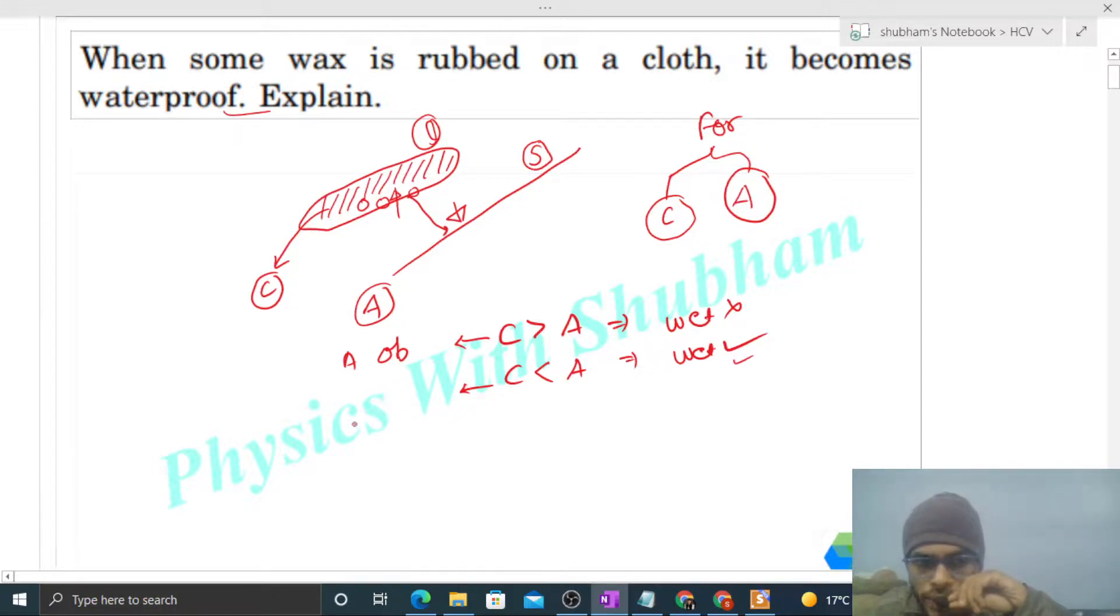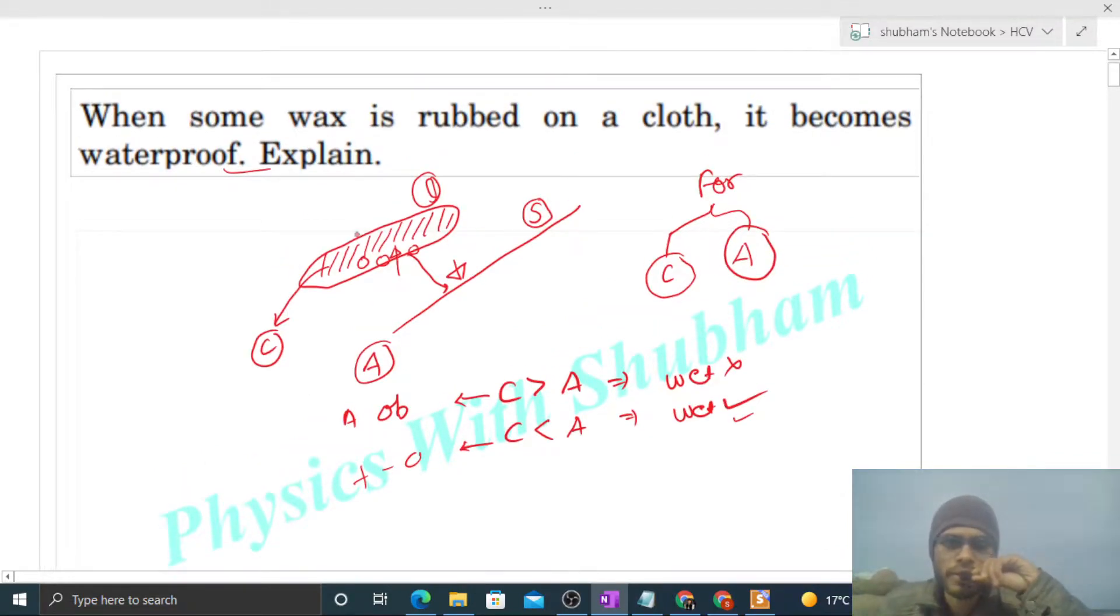Now you can easily answer this question: the angle of contact between the cloth and the water is acute, and the angle of contact between the water and the wax is obtuse.